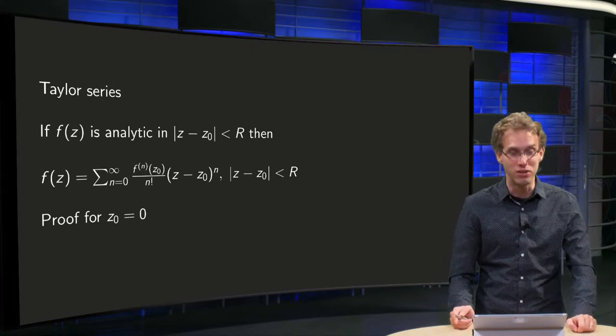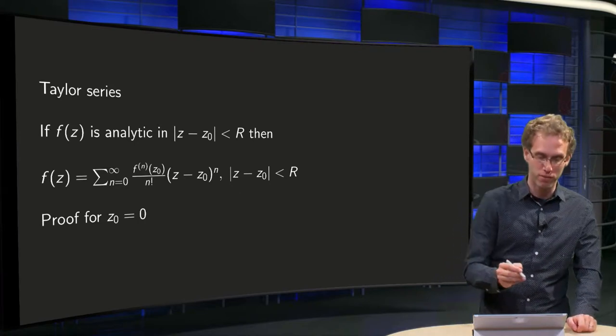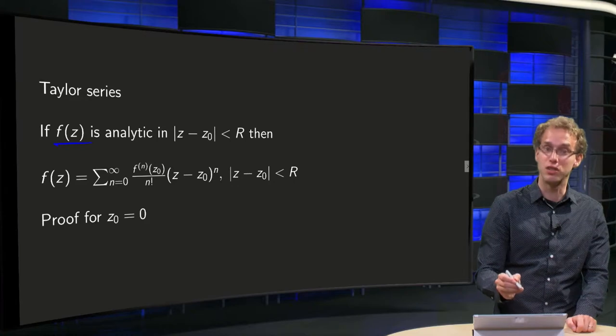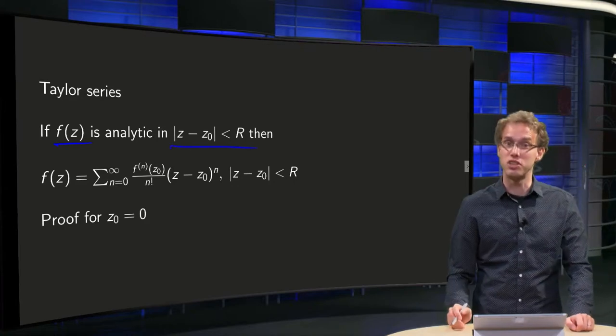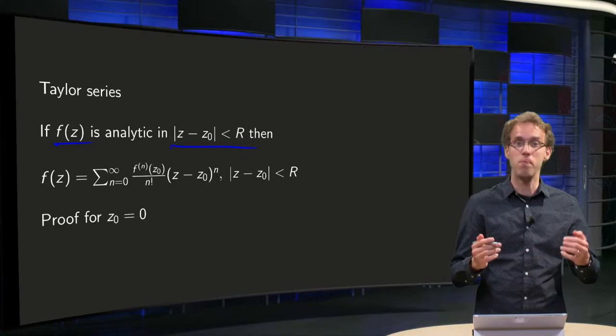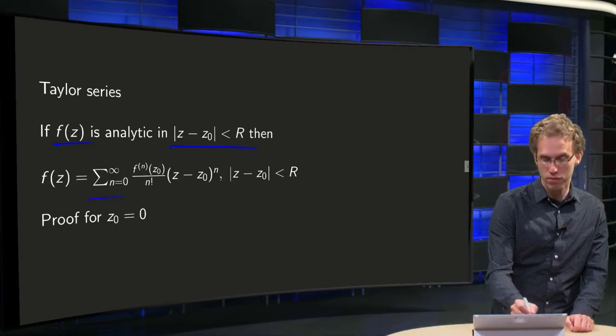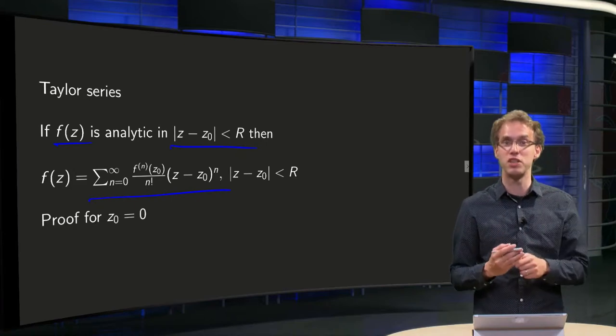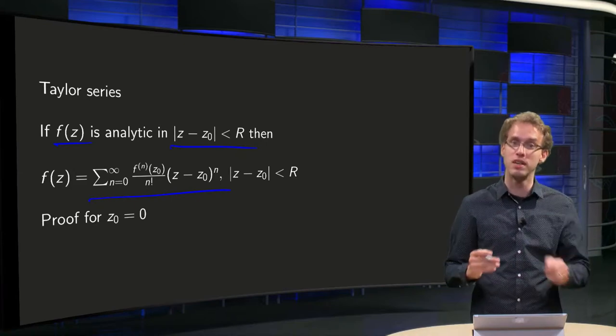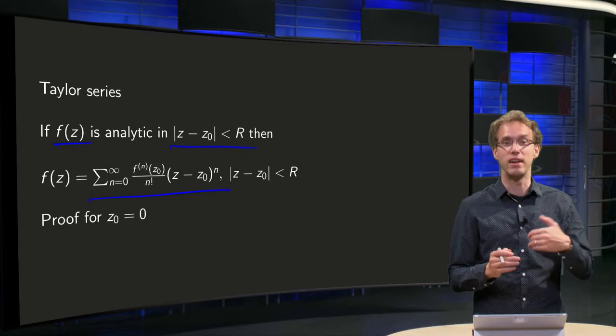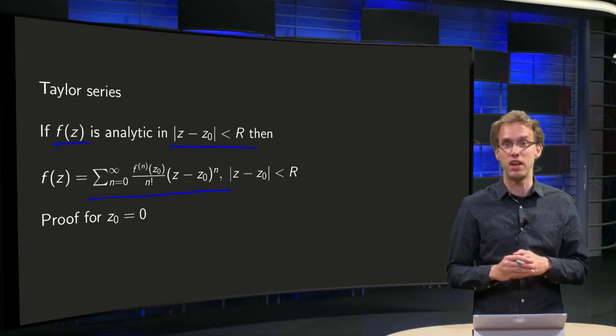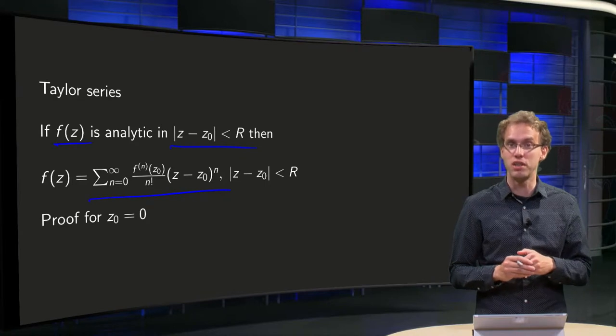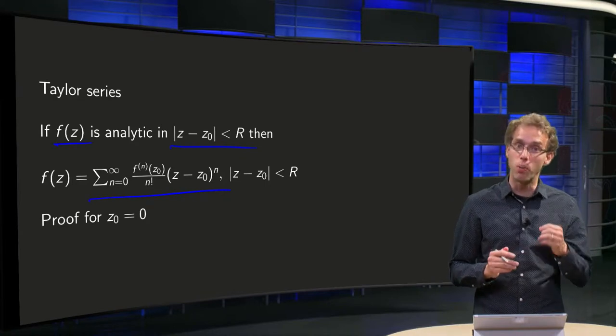That is what you will learn in this video. So if your function f of z is analytic in some circular disk around z₀, then you know that it has a Taylor series, the nth derivative of z₀ over n factorial times (z minus z₀) to the power n, sum over it inside the disk around z₀. So why is it true?